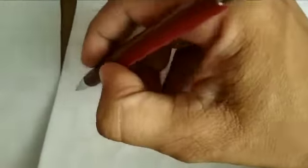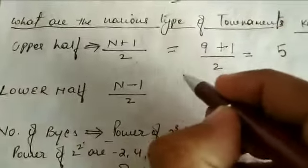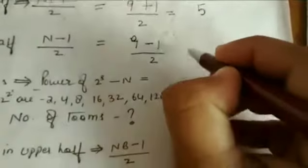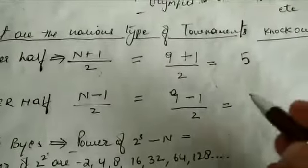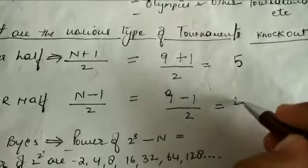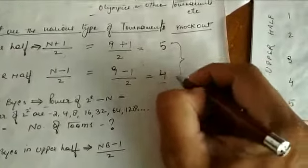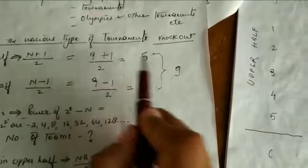Now let's see the lower half formula. My N is 9, so the formula is (N-1)/2 — that is 9 minus 1 equals 8, divided by 2 equals 4. In the lower half, we will have only 4 teams: 1, 2, 3, 4. So 5 plus 4 gives us the total of 9 teams, divided into upper half of 5 and lower half of 4.